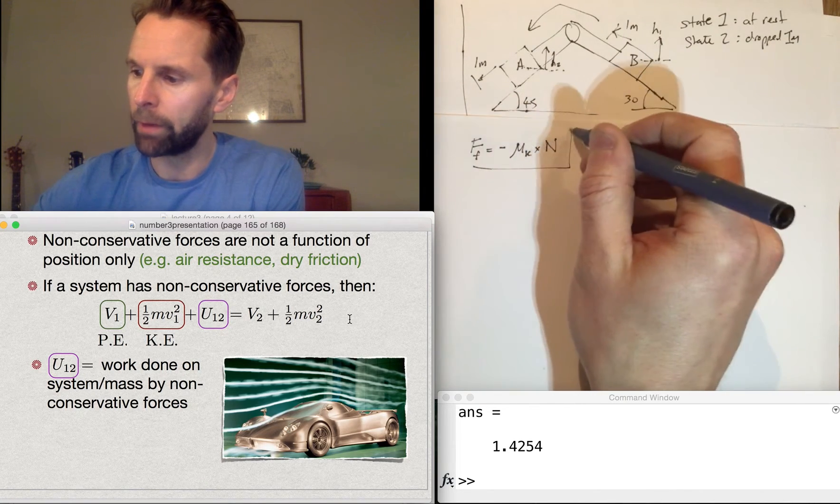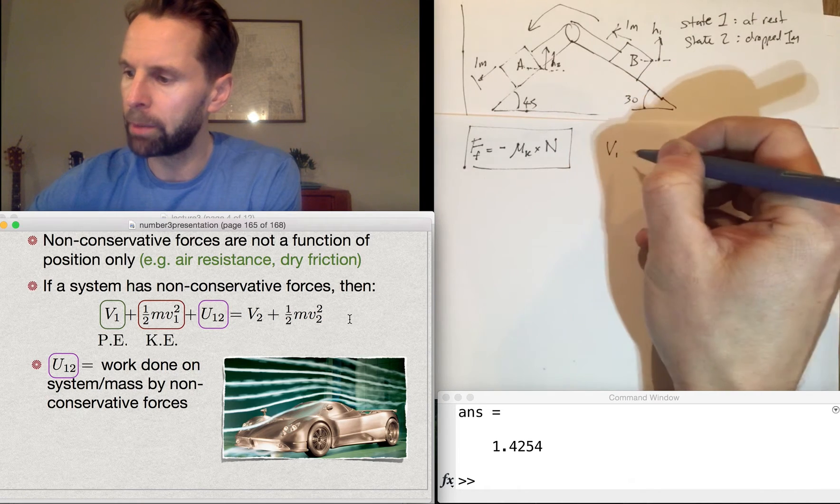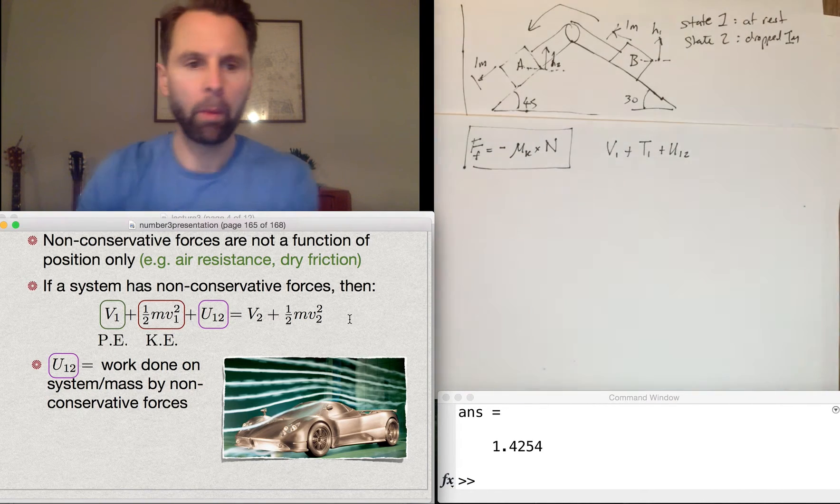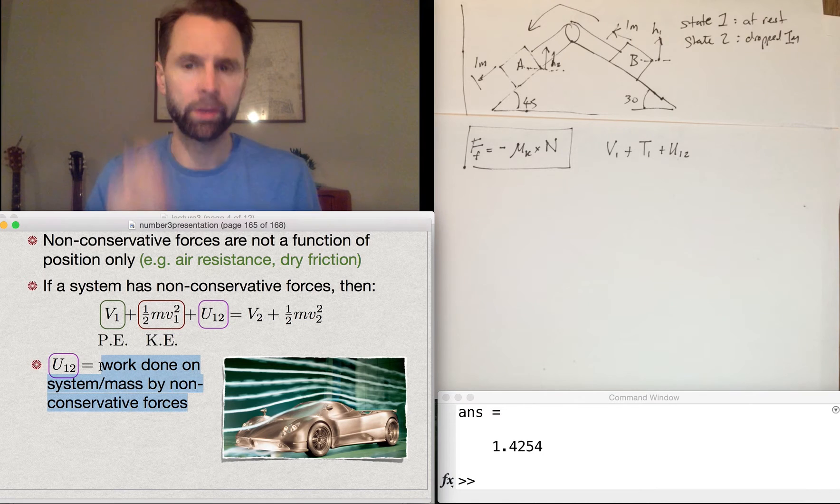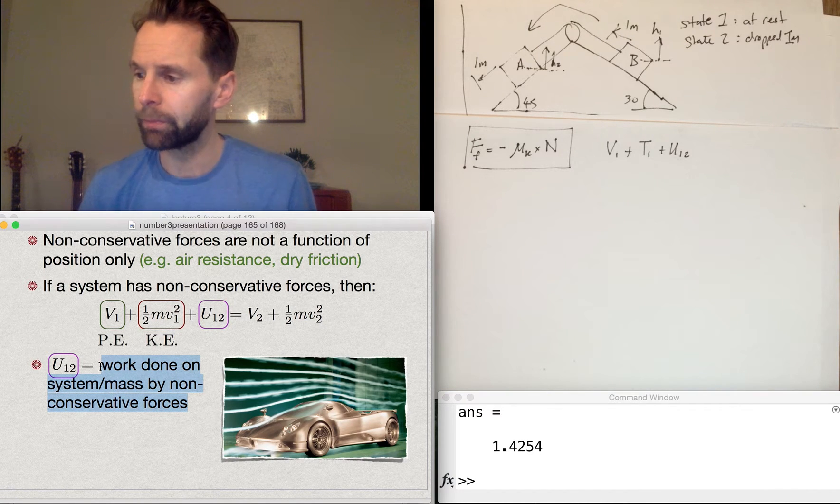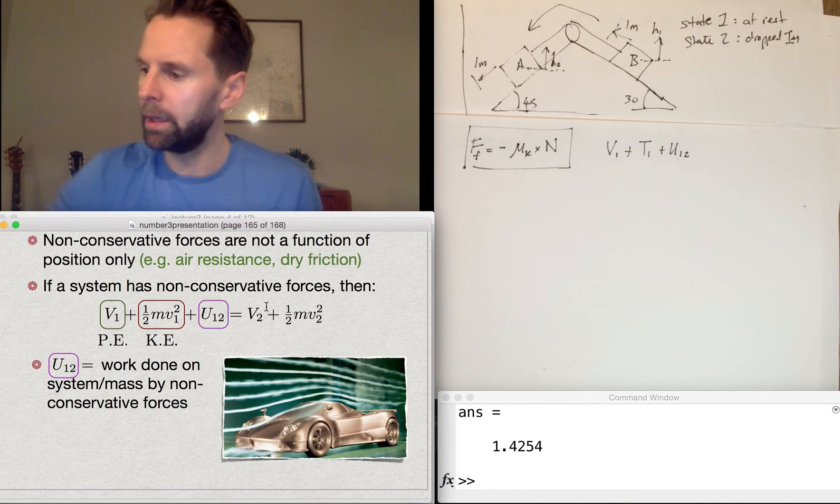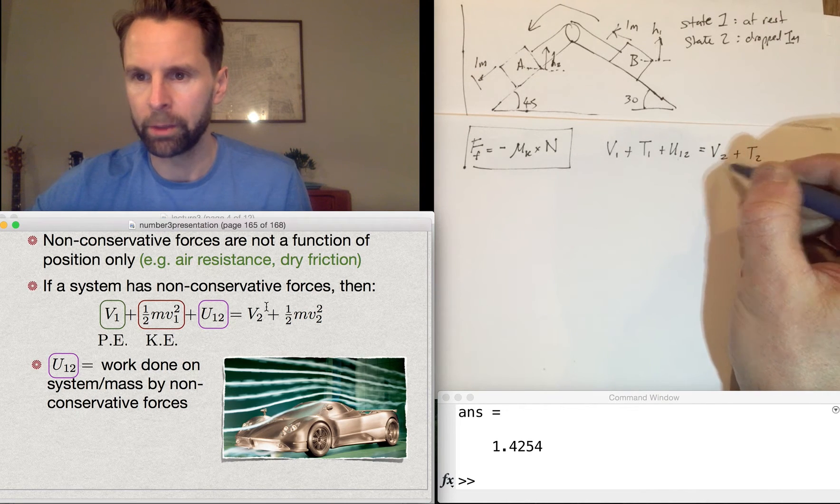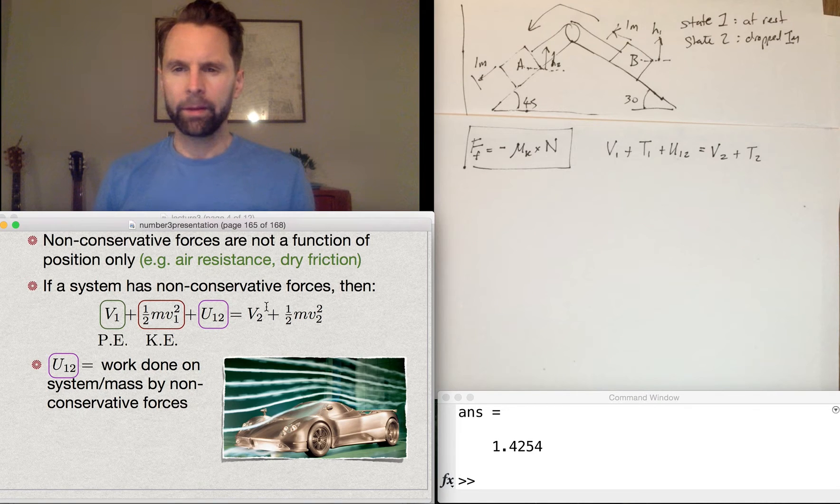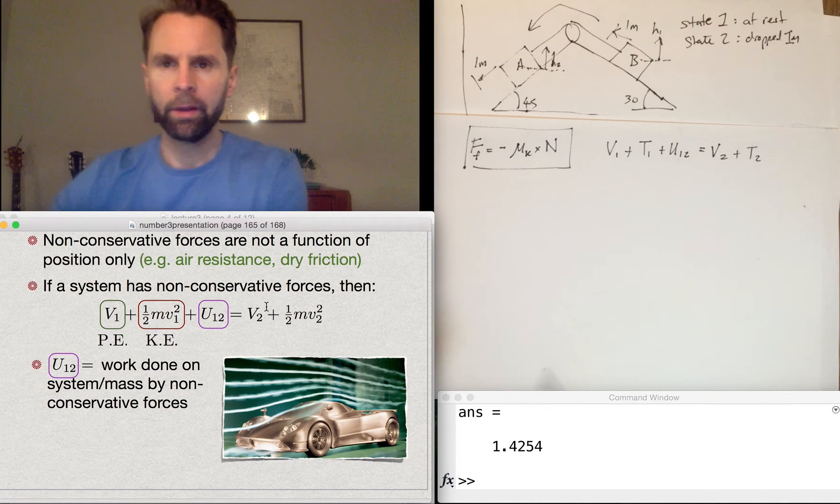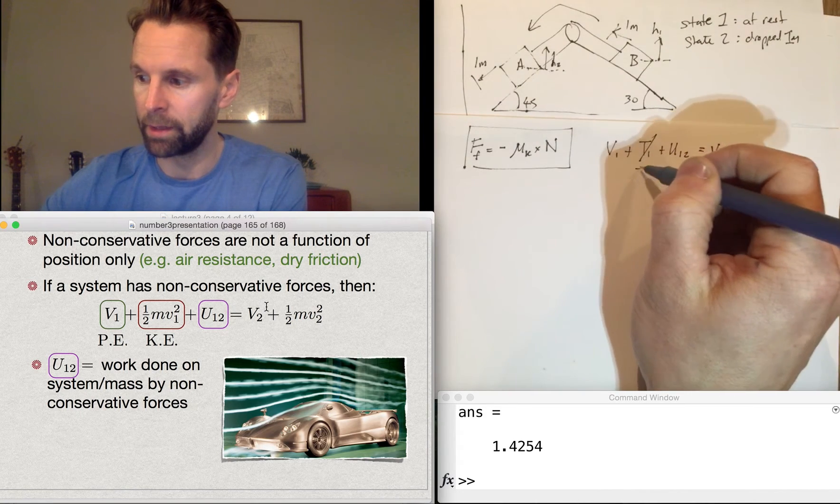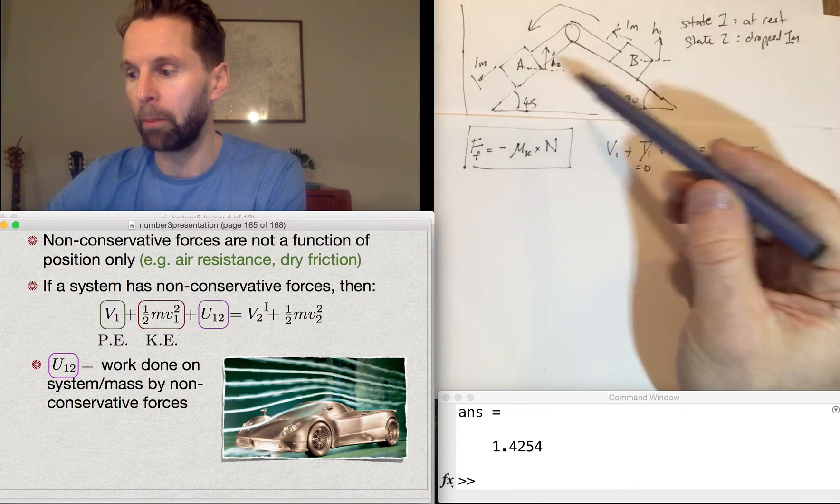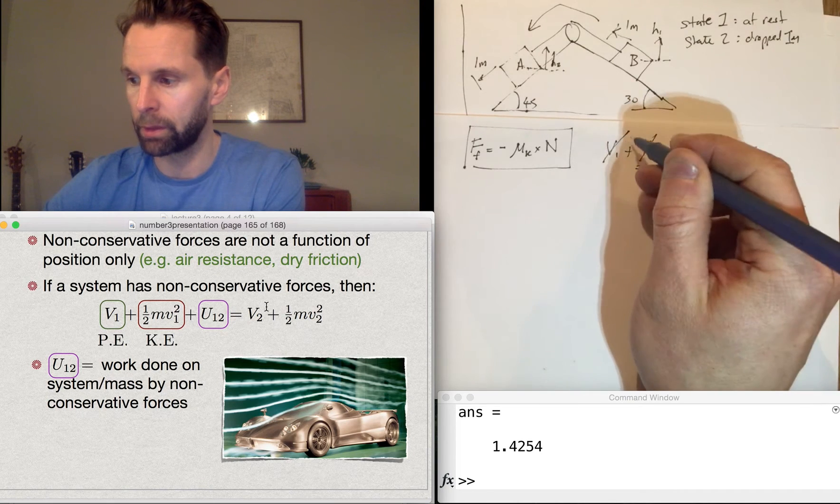The potential energy plus the kinetic energy plus the work done by non-conservative forces on the boxes, that's U12, is equal to V2 plus T2, the potential energy at state 2 plus the kinetic energy at state 2. Initially they're at rest so the kinetic energy is zero, and we'll define the datum for each box such that the potential energy of the boxes are both equal to zero.